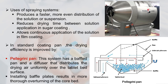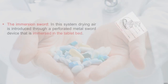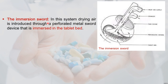The immersion sword system introduces drying air through a perforated metal sword that is immersed in the tablet bed. The inlet delivers heated air and the exhaust pipe removes the used air.